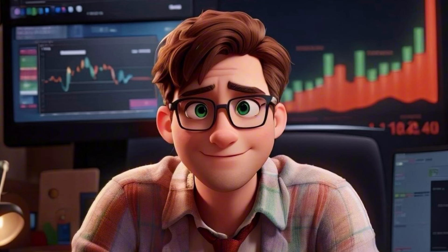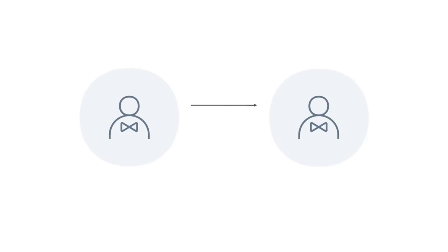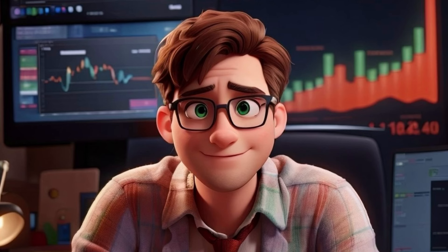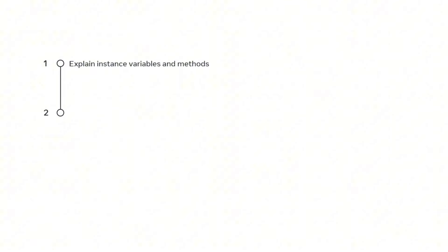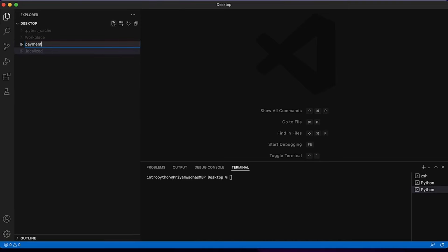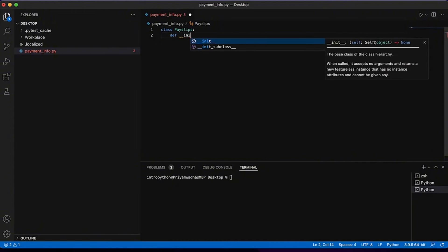Let's try to solve a problem that may occur for managers at a restaurant. The current system for paying wages requires managers to update each other every time an employee requests payment. Because this is cumbersome, they would like to implement an automated approach. There's a way to reduce the number of steps using instances. By the end of this video, you'll be able to explain what instance variables and methods are, and how to use them to change the state of an instance object. Let's start a new file called paymentinfo.py. I'll create the class payslips and initialize three variables: name, paystatus, and amount.